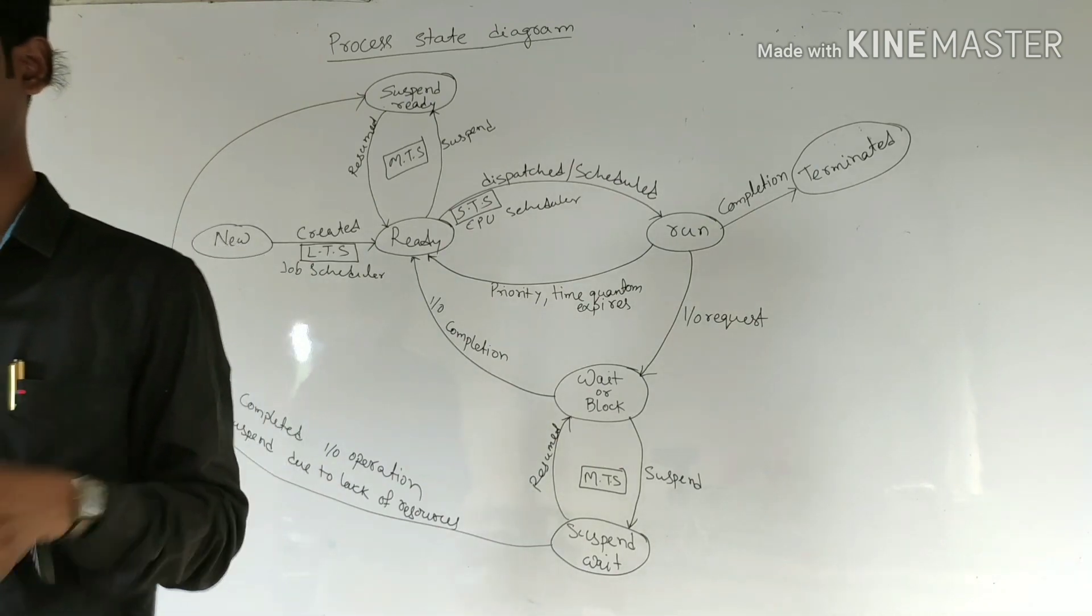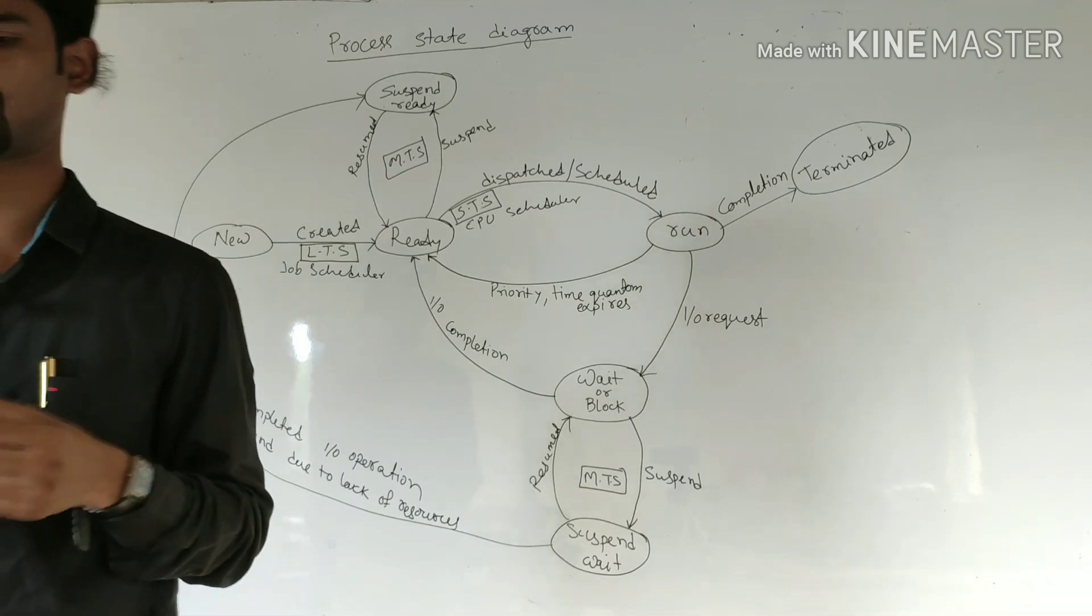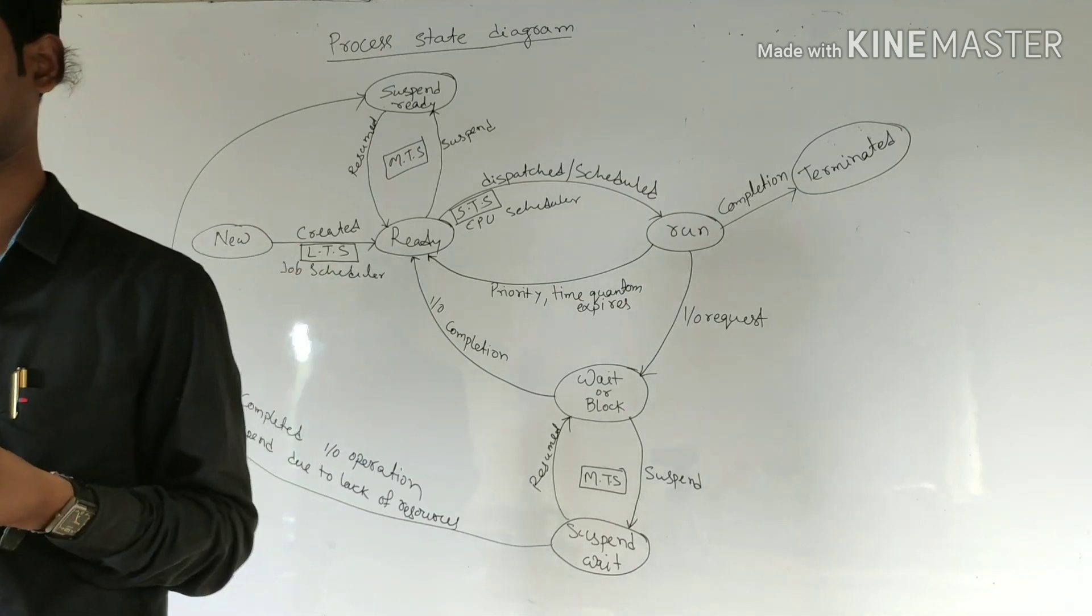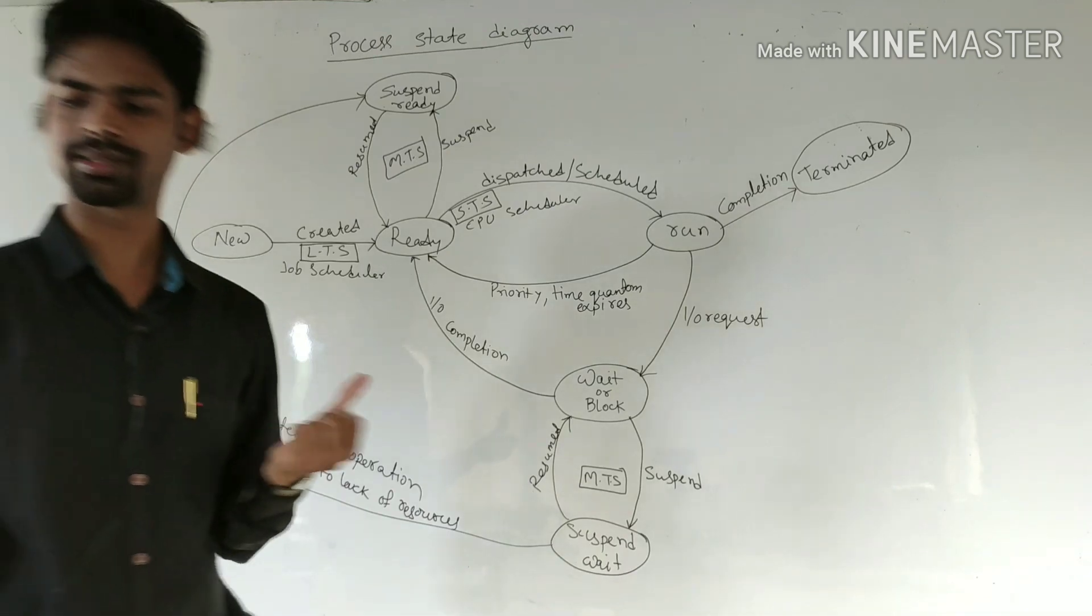The long-term scheduler should select a good combination of both CPU-bound and I/O-bound processes in order to get good throughput to the system.